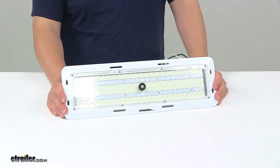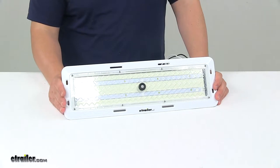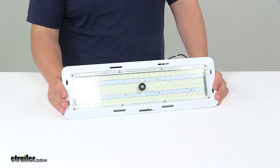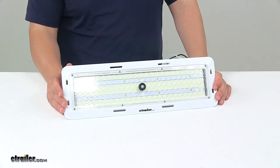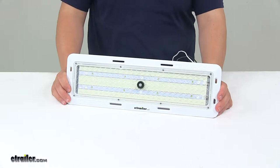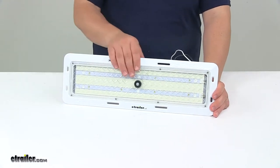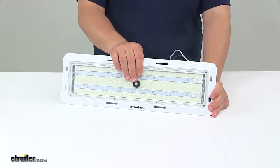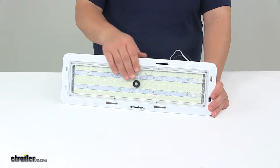Today we're taking a look at the Optronix OptiBright LED Dome Light. This is designed for use in extreme temperatures, so it's ideal for refrigerated trucks and trailers. It withstands temperatures from negative 40 degrees Fahrenheit to positive 140 degrees Fahrenheit. Directly in the center, it features a motion sensor, so the light will come on automatically when motion is detected.